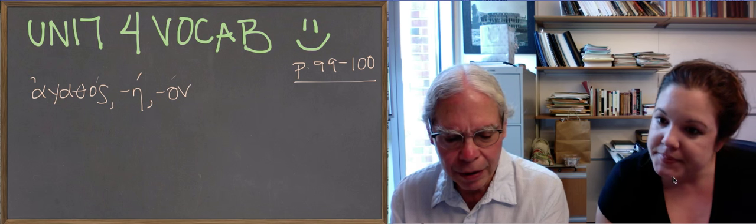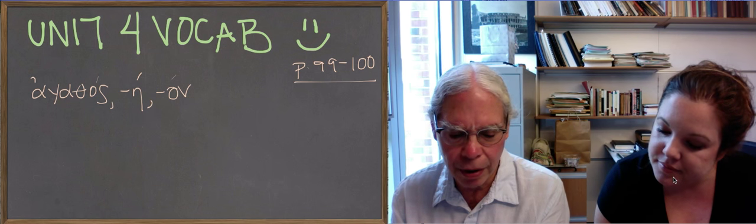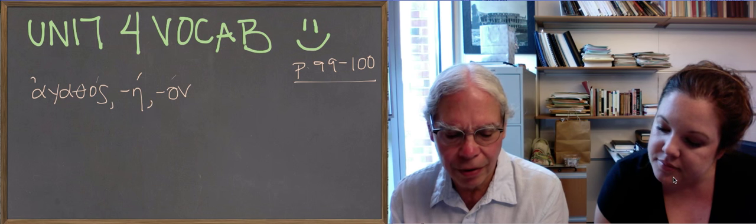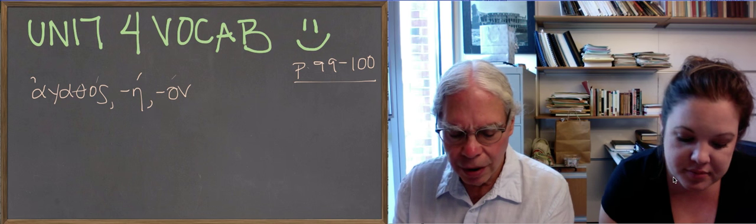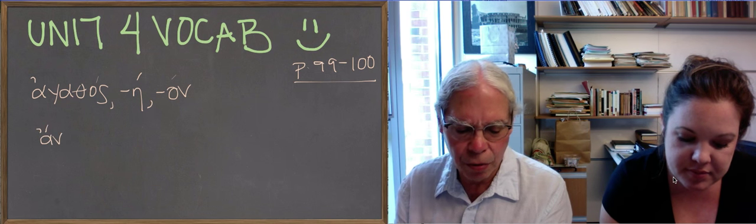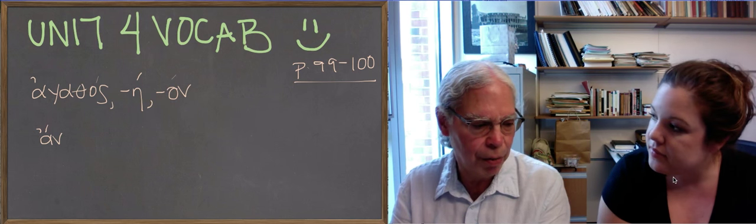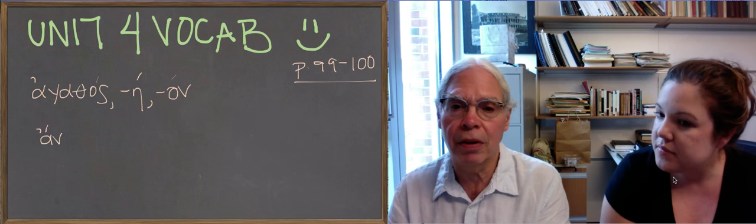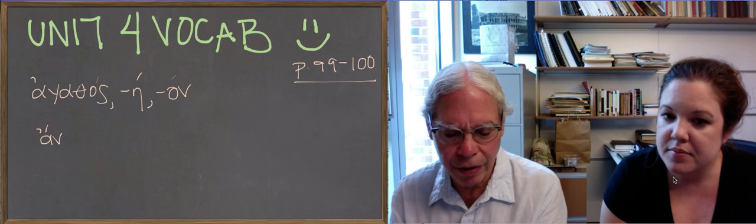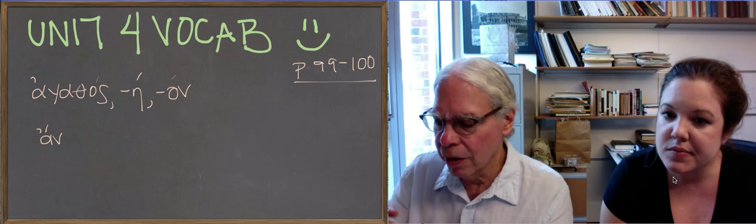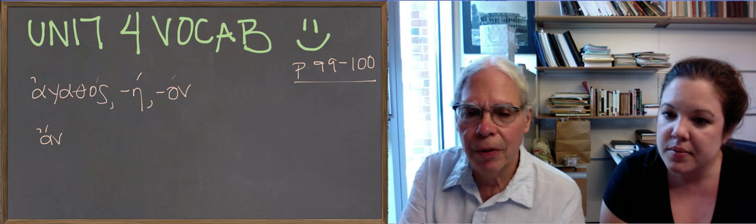The next word is the modal particle on, which it doesn't define but says in italics, used in some conditional sentences. This is a word that has no semantic content. It's a grammatical marker. So there is no way of translating it. What you need to understand is what its function is in particular kinds of sentences.